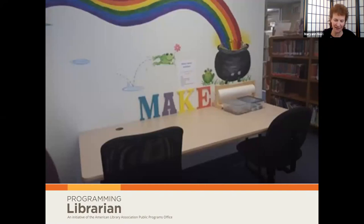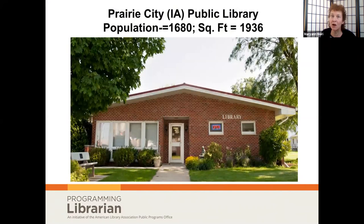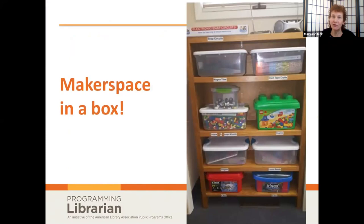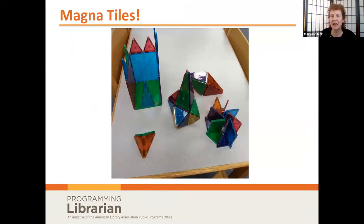This librarian took a shelf that formerly housed reference materials — no longer being used because most reference materials are now online — and turned it into a makerspace shelf with various kits in boxes. Several librarians highly recommend magnet tiles, and there's also a light table you can order if you have the space and finances. Even without the light table, the magnet tiles work quite well. Circuit sets are another recommended item.